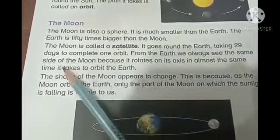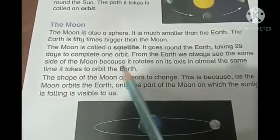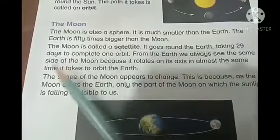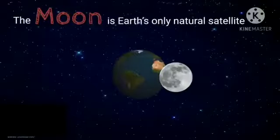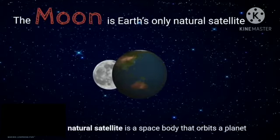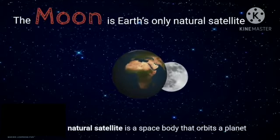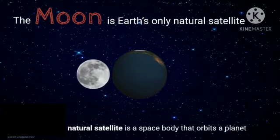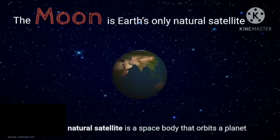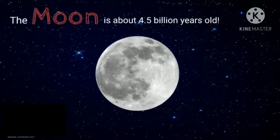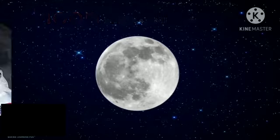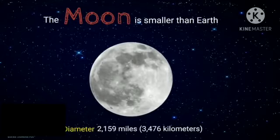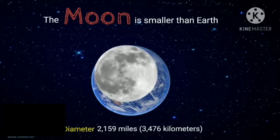The moon goes round the Earth, taking 29 days to complete one orbit. From the Earth we always see the same side of the moon. The moon is Earth's only natural satellite — meaning something that occurs naturally in space and goes around planet Earth. The moon is about 4.5 billion years old, formed 30 to 50 million years after the Earth. Its diameter is just 2,159 miles or 3,470 kilometers.